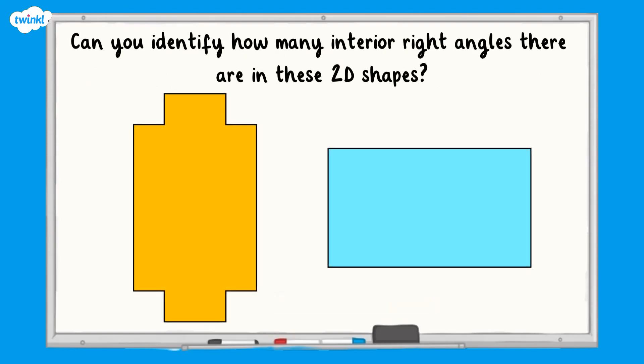Can you identify how many interior right angles there are in these 2D shapes? Pause the video whilst you work out your answers. All complete? Well done! Here are the answers. In shape 1 there are 8 interior right angles. In shape 2 there are 4 interior right angles.